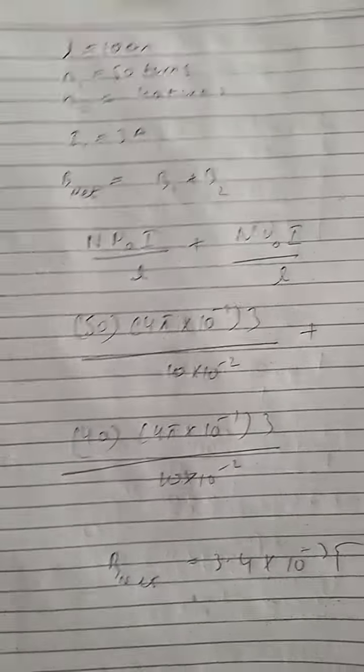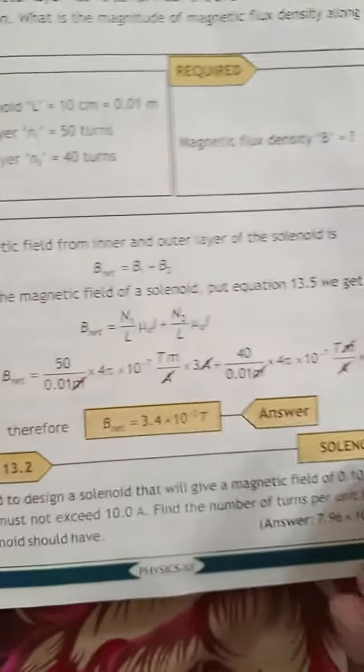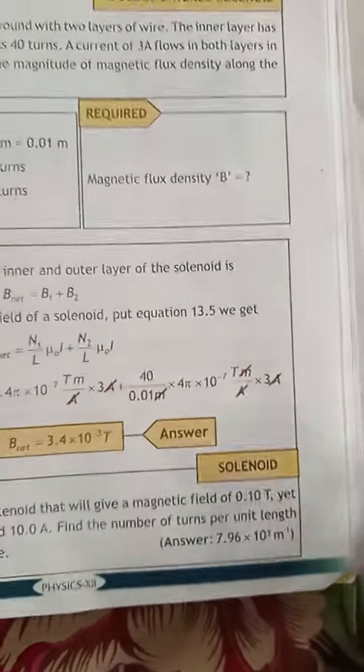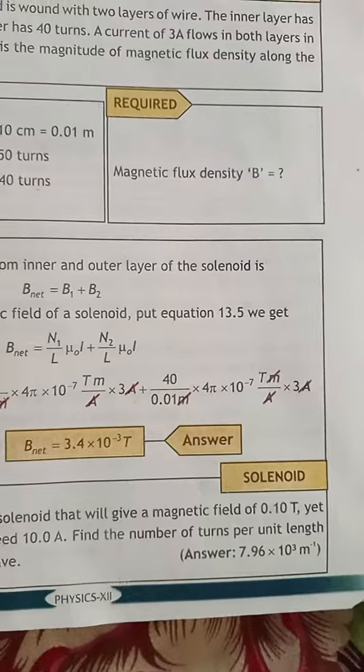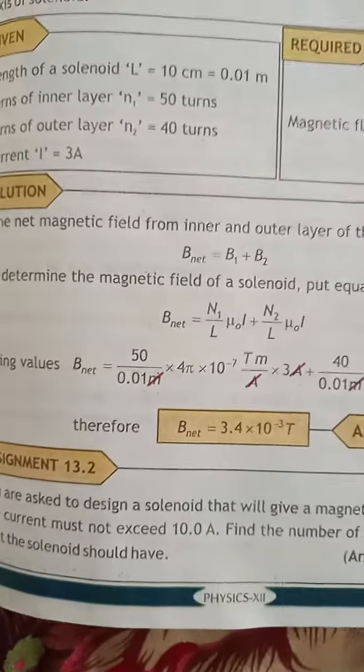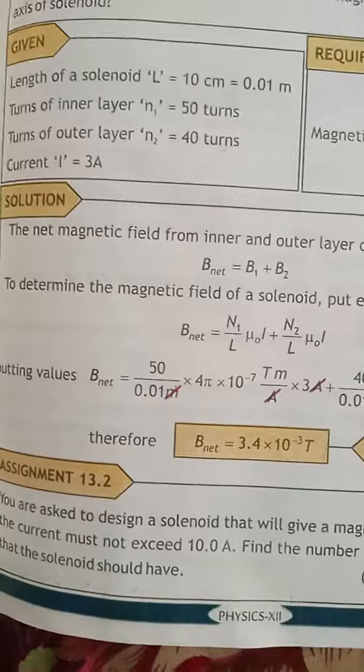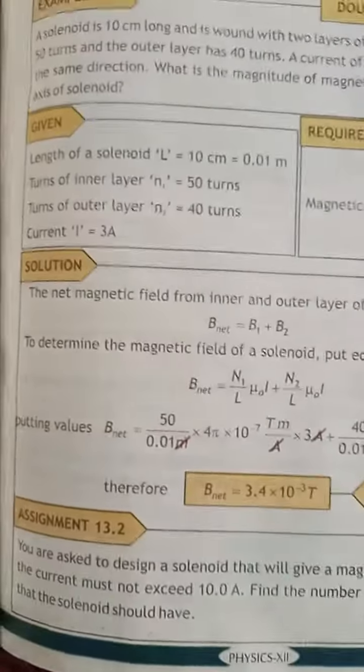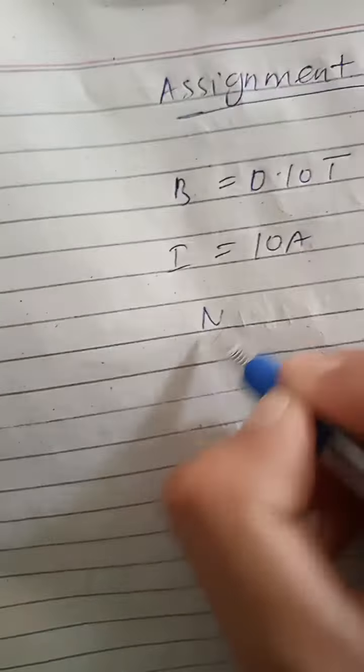Now let's do Assignment 13.2 guys. Assignment 13.2 you are asked to design a solenoid that will give a magnetic field B of 0.10 Tesla yet the current must not exceed 10 amperes. Find the number of turns per unit length that the solenoid should have.